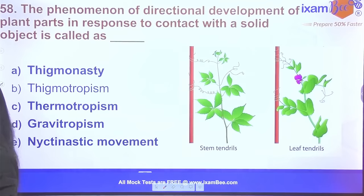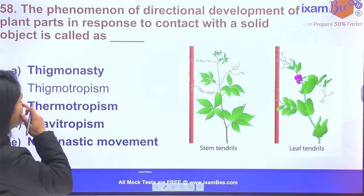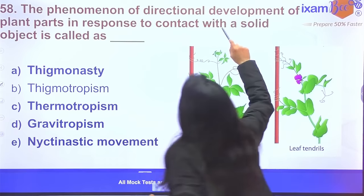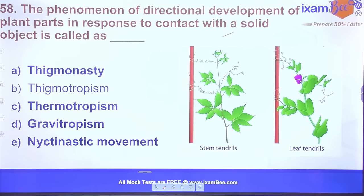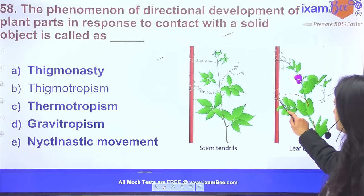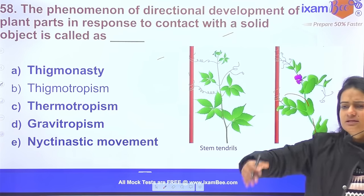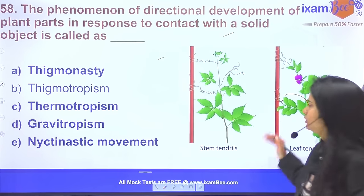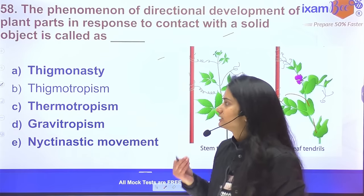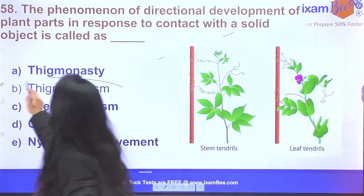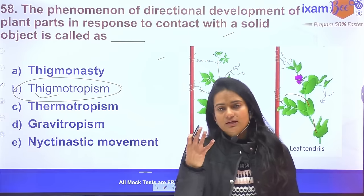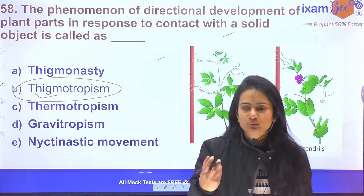Question 58: The phenomena of directional development of plant parts in response to contact with a solid object — for example, leaf tendrils coil around a stick or stand. This is due to thigmotropism (touch tropism). Thigmotropic movement is a tropic (growth) movement.